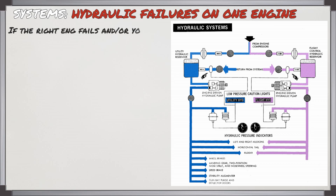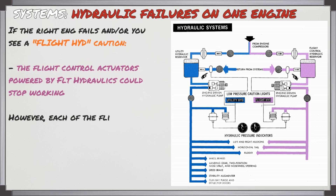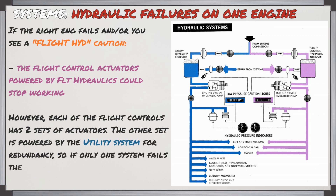If the right engine fails or you see a flight hydraulics caution, the flight control actuators powered by the flight hydraulics could stop working. However, each of the flight controls has two sets of actuators - the other set is powered by the utility system for redundancy - so if only one of those systems fails, the other will still be able to provide aircraft control.